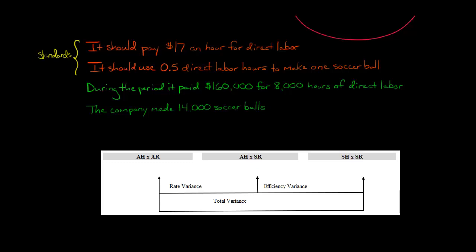So our actual hours times our standard rate. Right here. Let's start with that. So our actual hours is going to be 8,000 hours. That's just given in the problem. And then the standard rate is $17 an hour. That's also given. So if we multiply these together, we get $136,000.